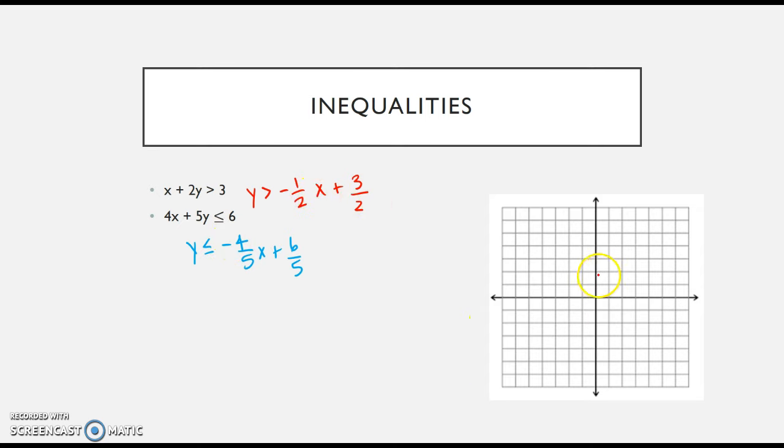It's the same equations, but now instead of an equal sign, I've got a greater than and a less than or equal to. If I graph the first, I go to 3/2, which is 1.5, and go down 1 over 2 all the way across. The difference here is that now it's just greater than, so I'm going to use a dotted line instead of a solid line all the way across.